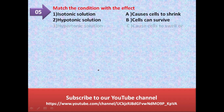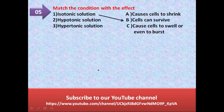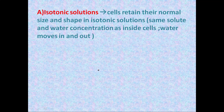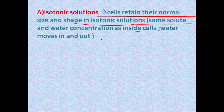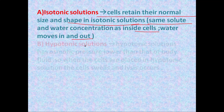The next question asks to match isotonic, hypotonic, and hypertonic solutions with their effects. In isotonic solution, cells can survive and retain their normal size and shape, because solute and water concentration inside the cell is the same — water moves in and out equally. In hypotonic solution, the osmotic pressure is lower than that of body fluid.